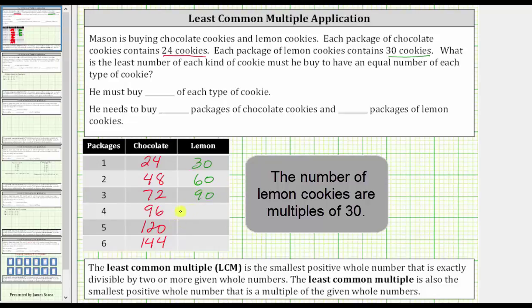For four packages, there are four times 30, or 120 lemon cookies. For five packages, there are five times 30, or 150 lemon cookies. And for six packages, there are six times 30, or 180 lemon cookies.